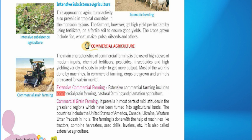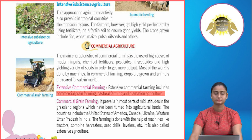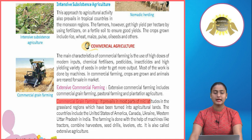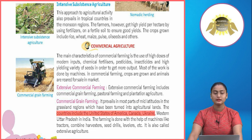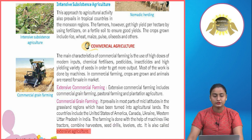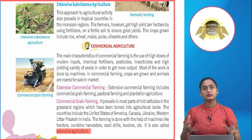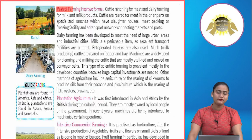Extensive commercial farming includes commercial grain farming, pastoral farming and plantation agriculture. Commercial grain farming prevails in most parts of mid-latitudes in the grassland regions that have been turned into agricultural lands. Countries include the USA, Canada, Ukraine and Western Uttar Pradesh in India. Farming is done with machines like tractors, combined harvesters, seed drills and levelers. It is also called extensive agriculture. In commercial grain farming, grasslands are converted into agricultural farms — mainly seen in mid-latitude regions.